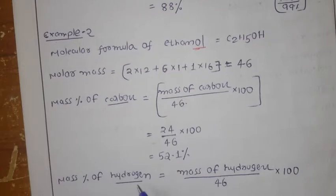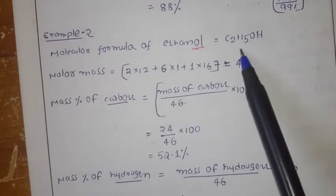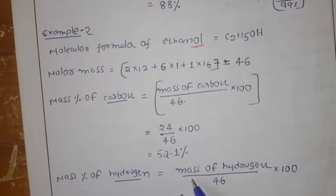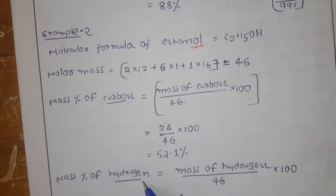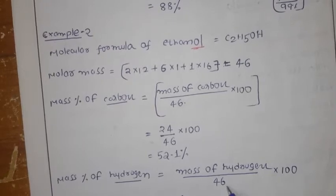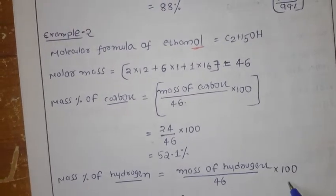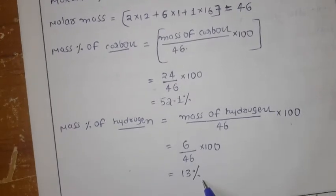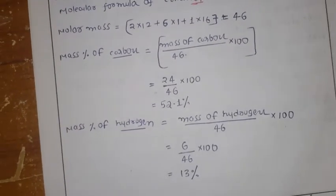Next, mass percentage of hydrogen in ethanol: the formula is mass of hydrogen divided by the molar mass of ethanol, which is 46, into 100. The mass of hydrogen in ethanol is 6. So 6 divided by 46 into 100 gives us 13% of hydrogen.